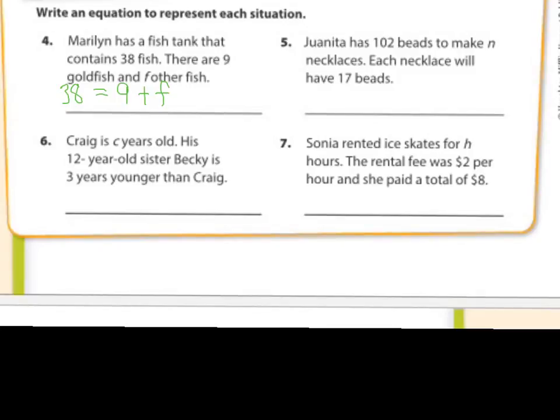Look at number five. Juanita, and you guys, on these notes, you can just write this part right here. Okay, so you'll write number five. Juanita has... Don't write this story. You don't have to unless you want to. Juanita has 102 beads to make in necklaces. Each necklace will have 17 beads. Okay, so all of these beads, she is going to... She has 102. And she's going to divide them up into however many necklaces she needs. Okay, we don't know. But that's going to equal 17 beads per necklace.